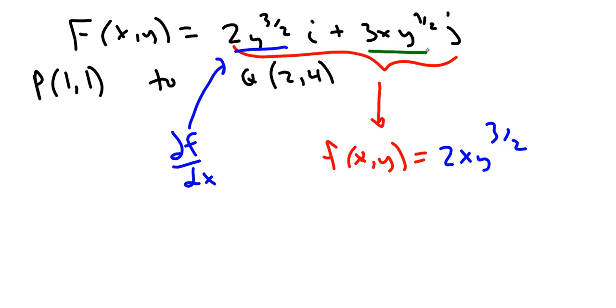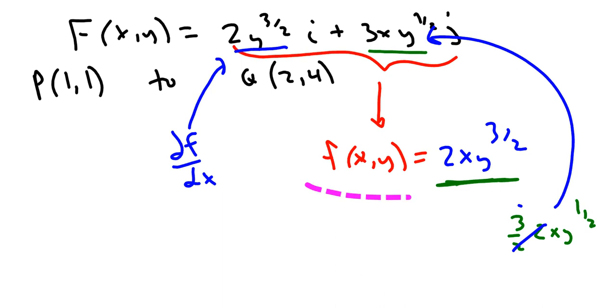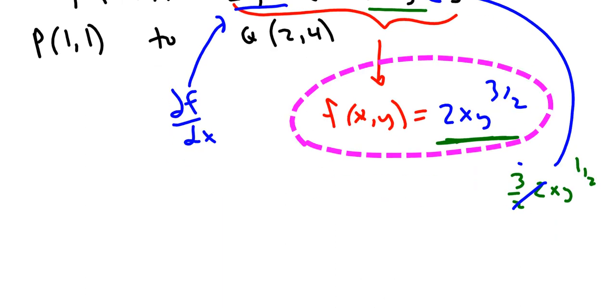Now, if we look at this piece and we would have just taken the derivative of this thing I just underlined in green with respect to y, you would get, watch, ready? You get 3/2 times 2xy to the 1/2 and then these just cancel and become a 3. You would get exactly that piece. So this is it. This is your scalar function.